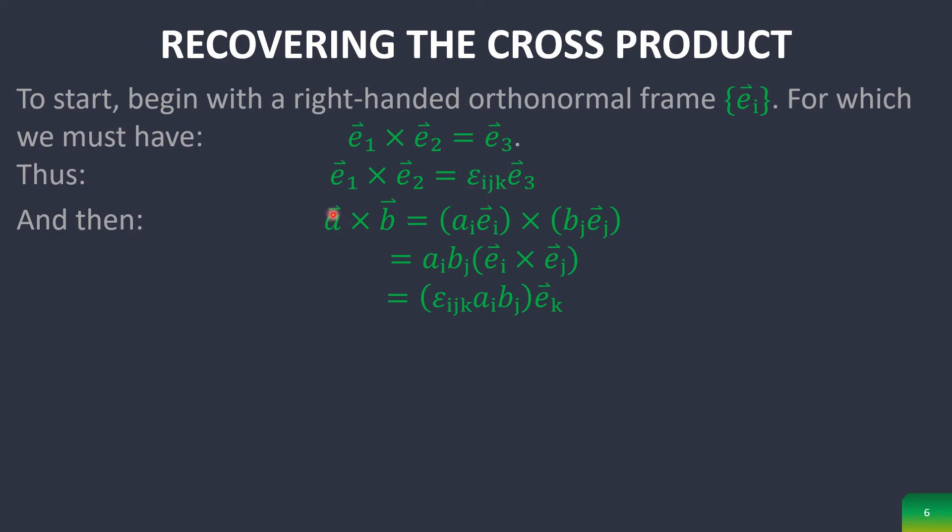And then basically, if you take A, which is composed of its vector component form, and you do the same with B, and you cross that, well, what you do end up having is the same definition for the vector cross product.